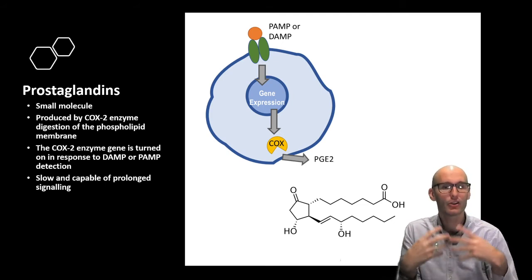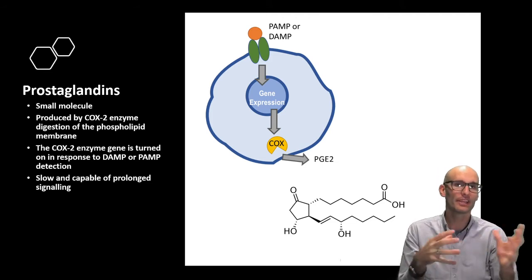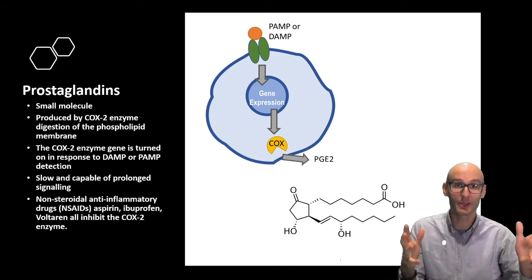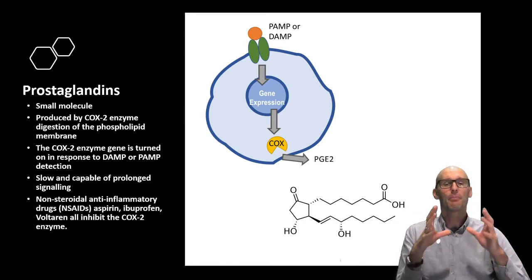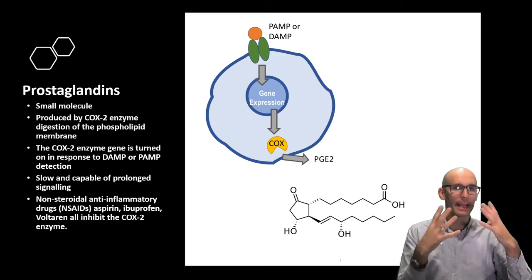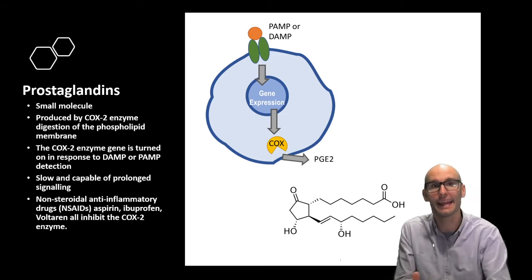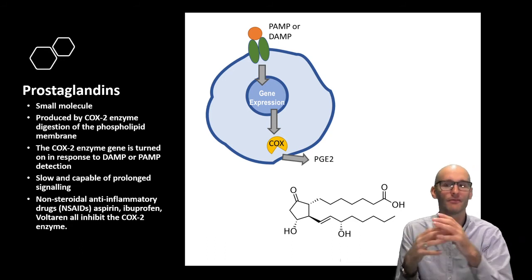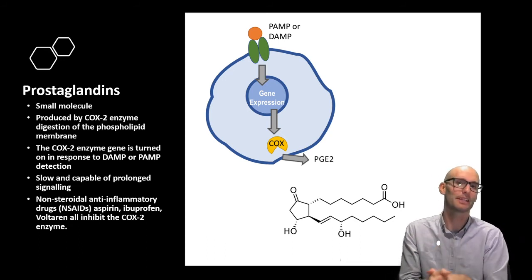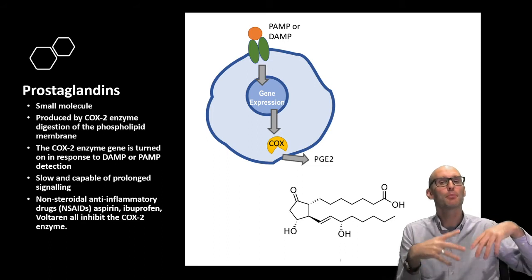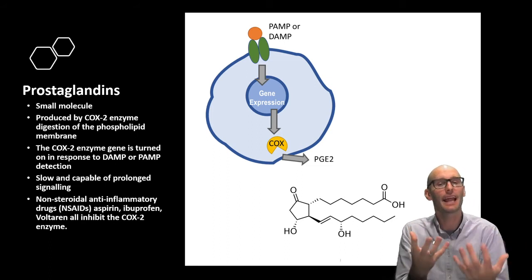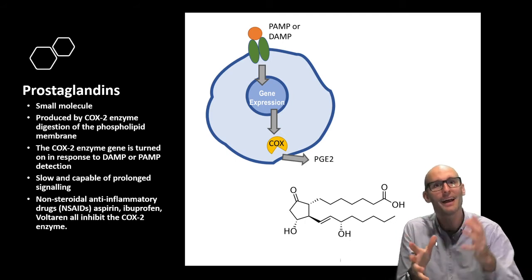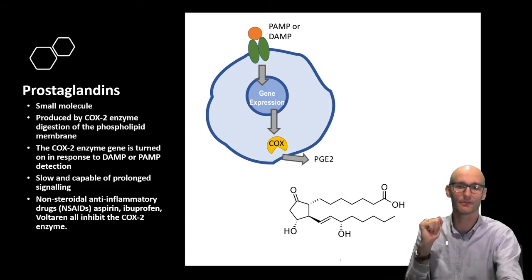The COX-2 enzyme is normally not expressed and it's turned on in response to a damage-associated molecular pattern or a pathogen-associated molecular pattern, or even by other inflammatory signaling molecules. It's slow because it requires gene expression change, and it's capable of prolonged signaling. We can continually pump out these prostaglandins using our COX-2 enzymes. You might all be familiar with prostaglandins and COX-2 because many pain relievers and anti-inflammatories that you take inhibit this enzyme. For example, aspirin, ibuprofen, voltarin, they all inhibit the COX-2 enzyme preventing the production of prostaglandin, preventing that inflammatory immune response. This is why they're anti-inflammatories.